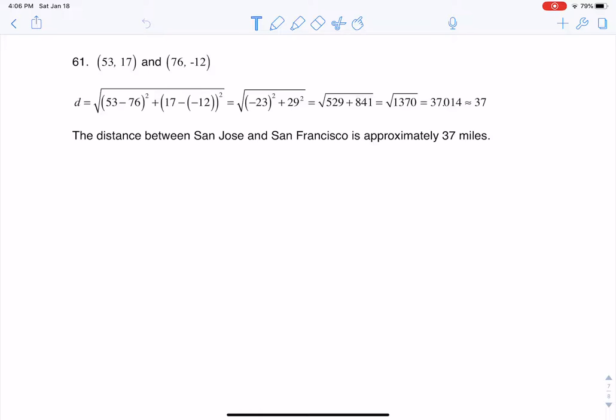This was telling us if we knew the coordinates to San Jose, where those coordinates of (76, -12) represent miles, we wanted to find the distance between San Jose and San Francisco.